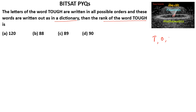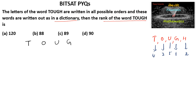First, let us identify the position of the letters. We can see G is the first letter in alphabetical order, then H is the second, then O, then T, and last U. So the required word is TOUGH: T-O-U-G-H.